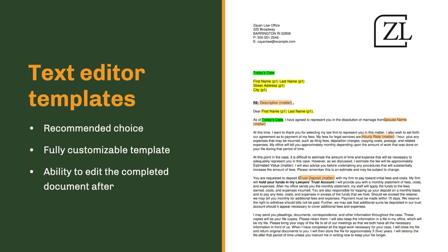The text editor template is your blank canvas — it's fully customizable, you can control the formatting and alignment, and you can include images and logos. We really encourage everyone to use these for client engagement letters. You'll see that some of the fields on here are marked in yellow and green — these are what we call merge fields. They allow you to take information from your contact or matter data and inject it into the document, and we'll automatically pull it in per matter.